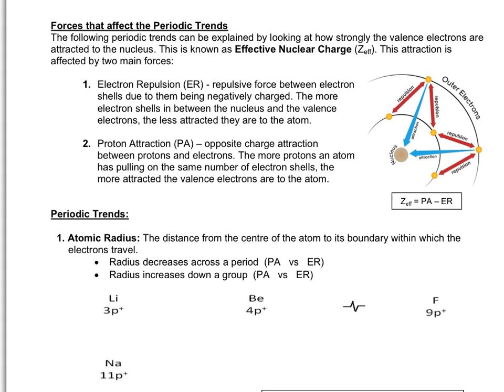Some new patterns for grade 11 are atomic radius, ionization energy, electron affinity, and electronegativity. Now, all four of these patterns, or trends, can be explained by looking at how strongly the valence electrons are attracted to the nucleus. This force of attraction is known as the effective nuclear charge, or Z_eff for short. The effective nuclear charge of an atom is affected by two main forces, the first being electron repulsion.